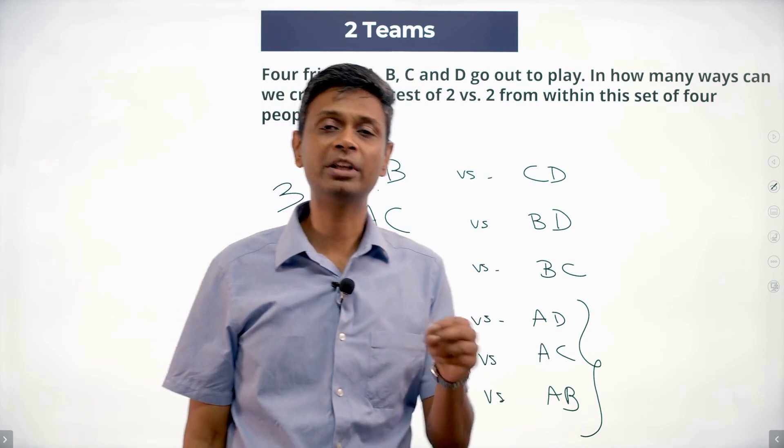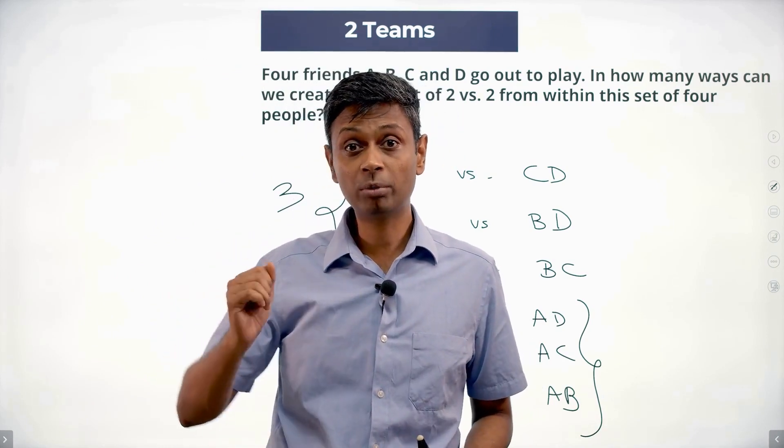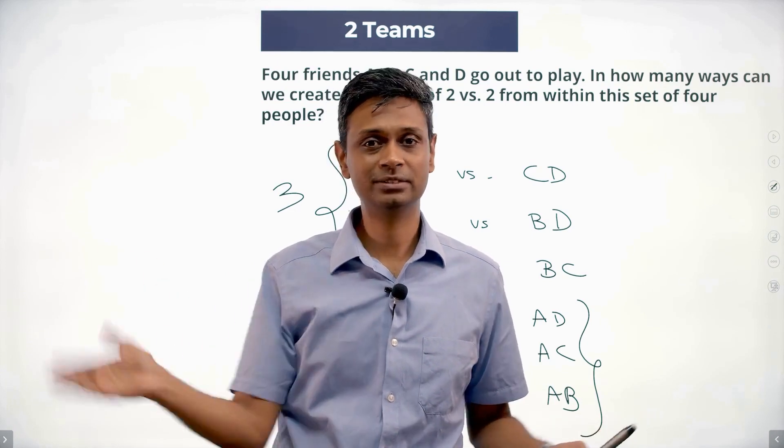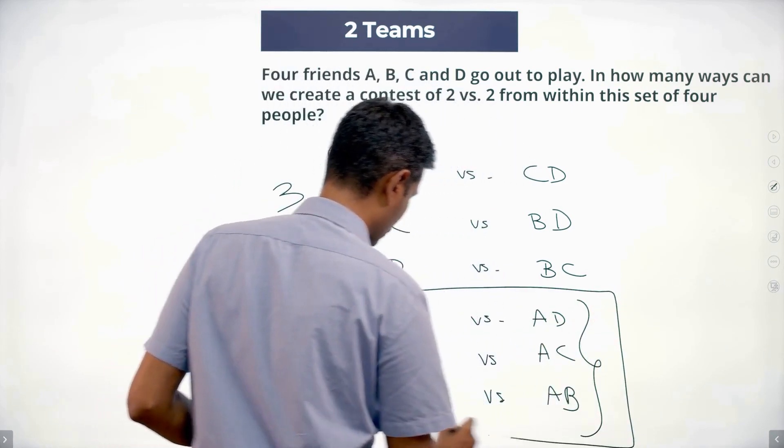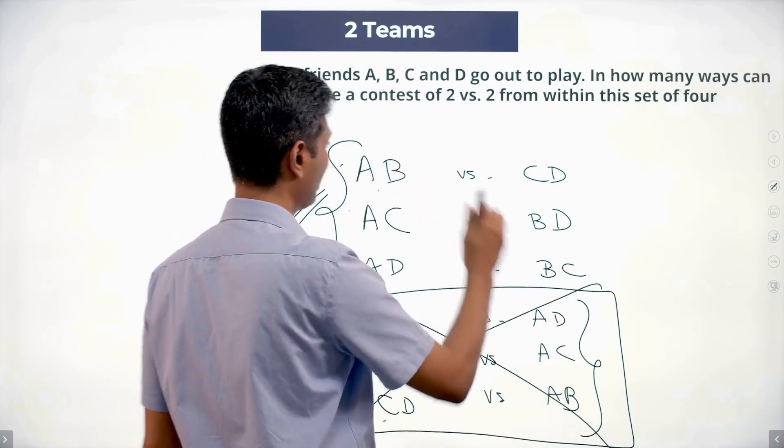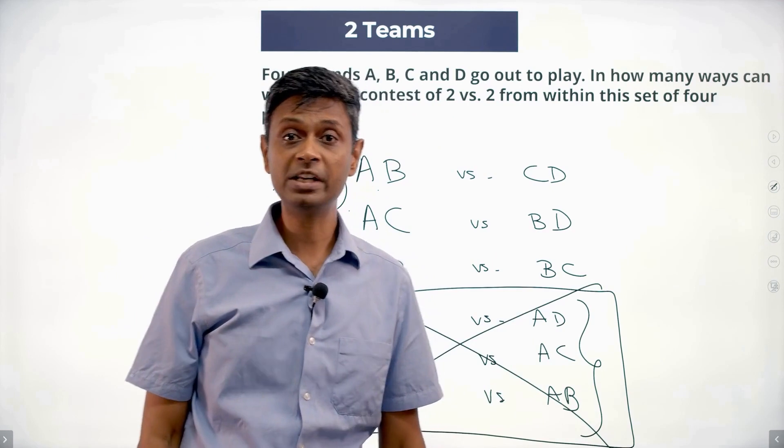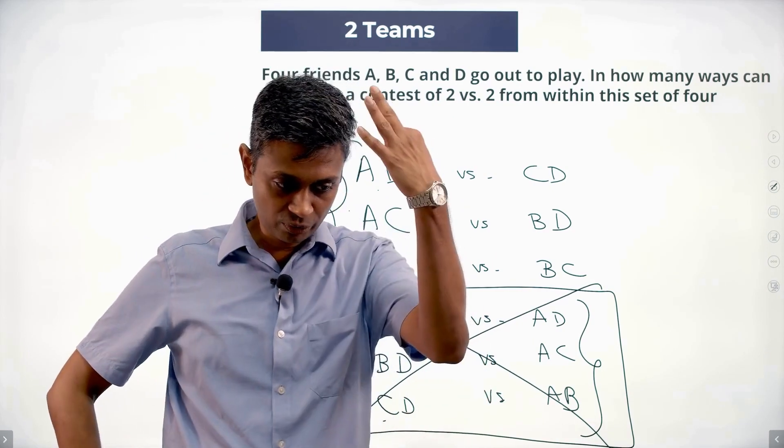Other way to think about it: we have to pair A with somebody. Suppose you are A and you want to play two versus two. You can be with B, you can be with C, you can be with D. That's it, all combinations have been counted. So there are three ways of doing this. Just remember, not six ways, only three ways. A, B versus C, D, A, C versus B, D, A, D versus B, C. Only three ways of doing this.